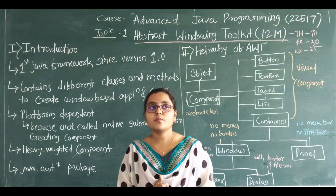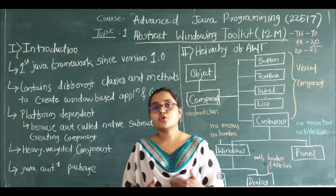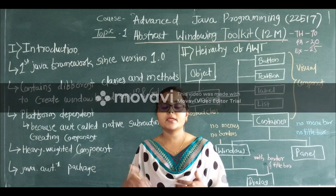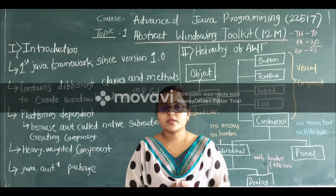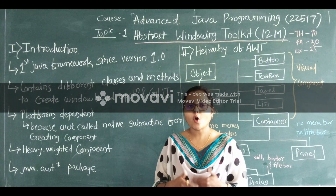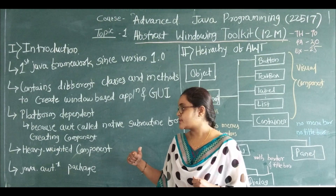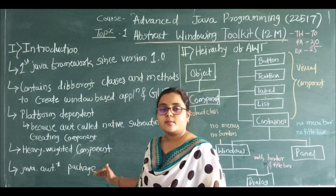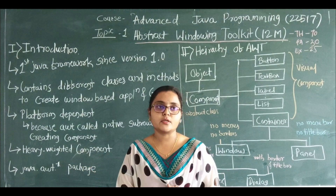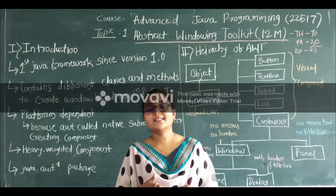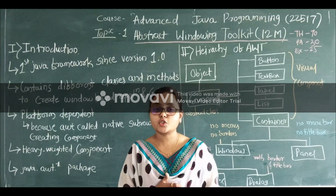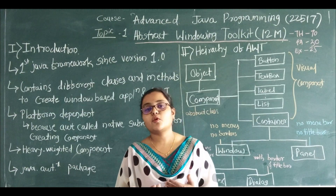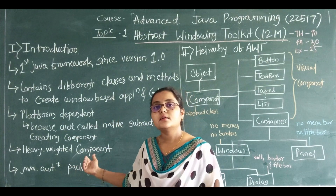The native subroutines call the operating system to create the button, that's why it is called a heavyweight component. It is rarely used now because every time a different component is created, the operating system is calling the native subroutine. This is quite a heavy operation for the operating system. So the components of AWT are called heavyweight components. For example, if I want to instantiate a text box, my operating system is going to create that text box. These are the features of AWT.